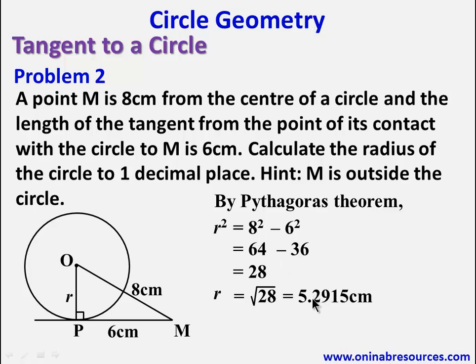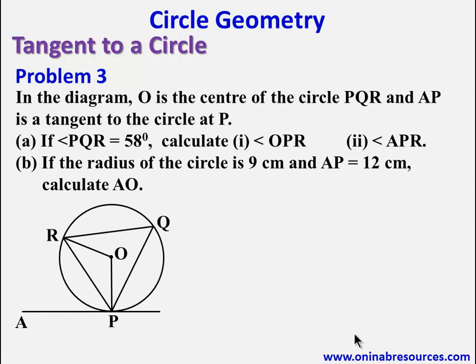This is the first decimal place. Since the second decimal digit is 9, we add 1 to the first decimal digit, giving us 5.3 centimeters to 1 decimal place. We are done with problem 2.